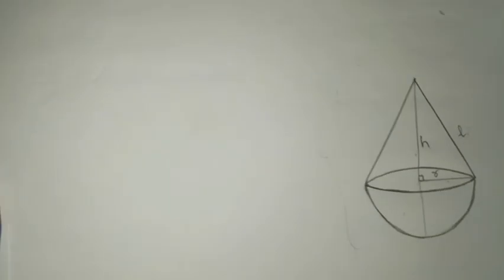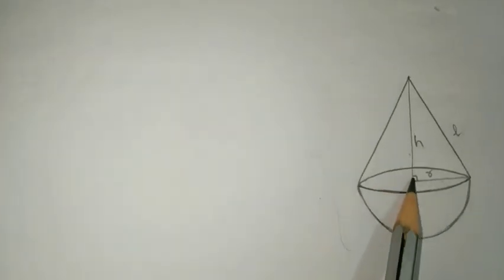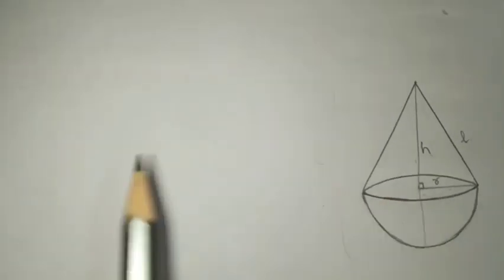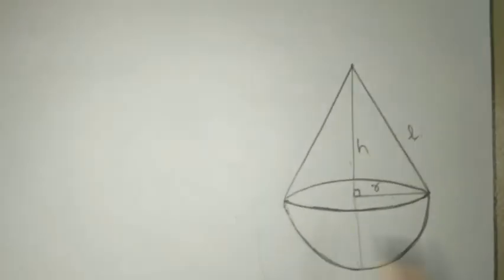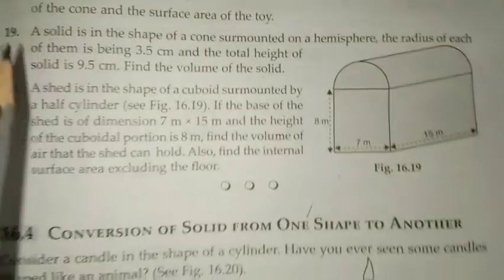You can find l using Pythagoras theorem, okay? But, however, for this question, l squared will work out to a perfect square, so you can find l directly. Here, the given values are: common radius, for the conical part height, and you need slant height l. Write the given values and substitute them in the formula for total surface area, which is curved surface area of cone plus curved surface area of hemisphere, okay?